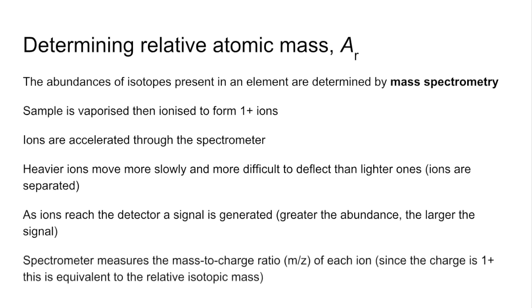And then the spectrometer measures the mass-to-charge ratio, or M over Z for short, of each ion. And because your charge is one plus, that's going to be equivalent to the relative isotopic mass.